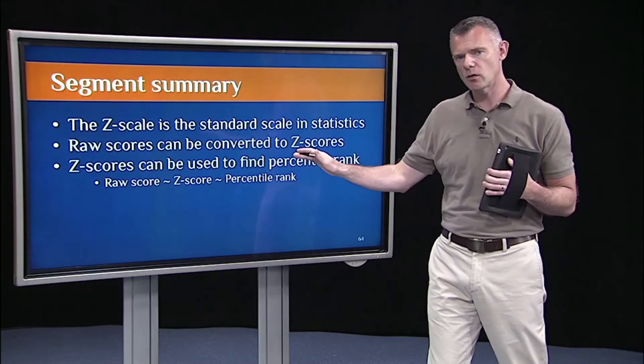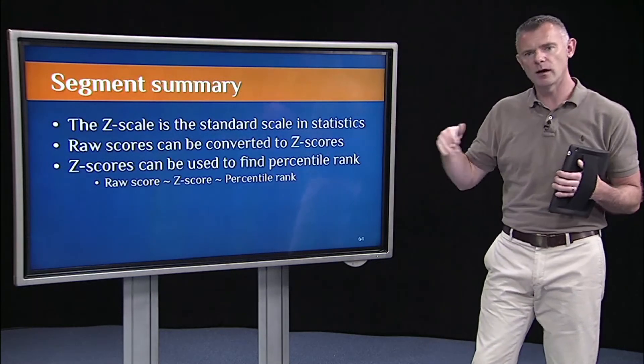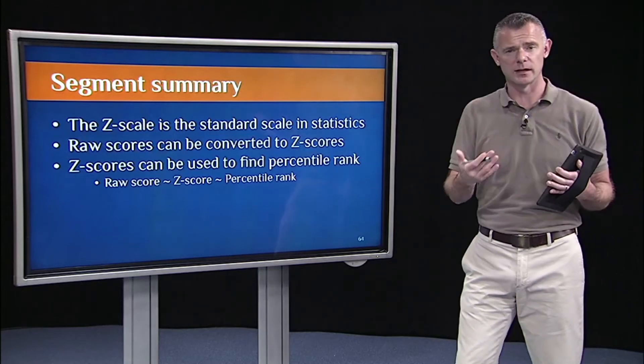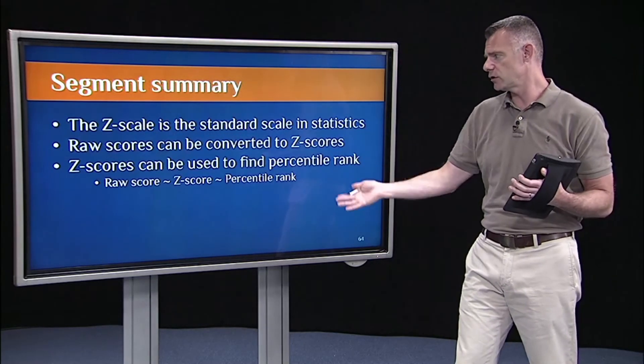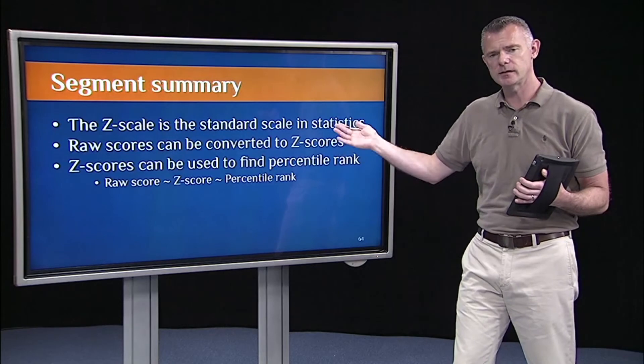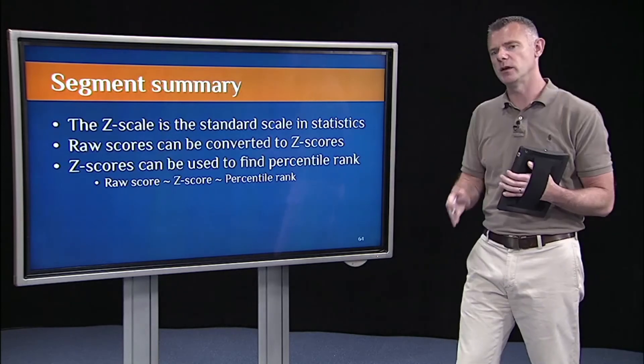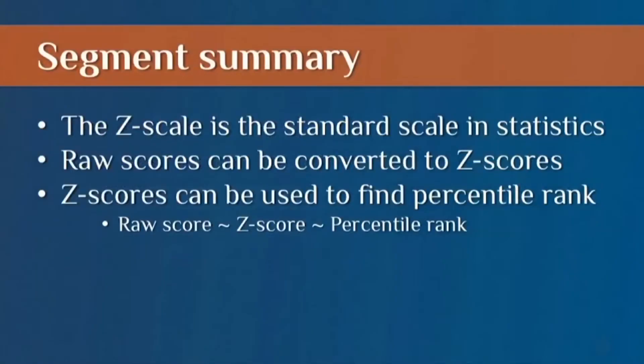I can take any raw score, convert it to a Z score, and once I have a Z score, I can get a percentile rank. So these conversions are very common in statistics, and at this point, you should be comfortable doing those types of conversions.